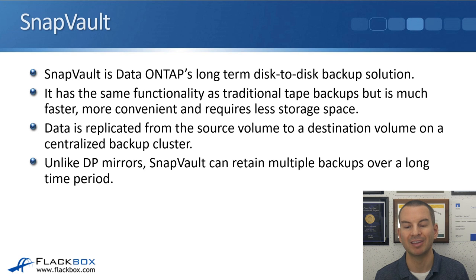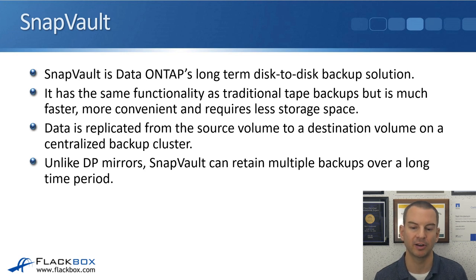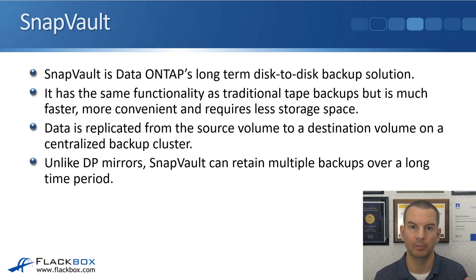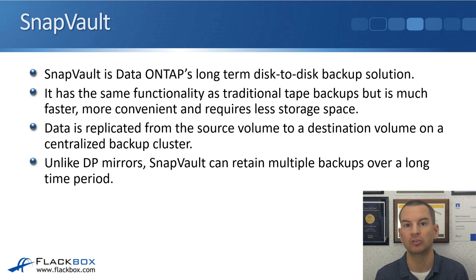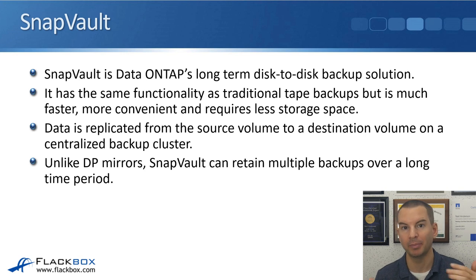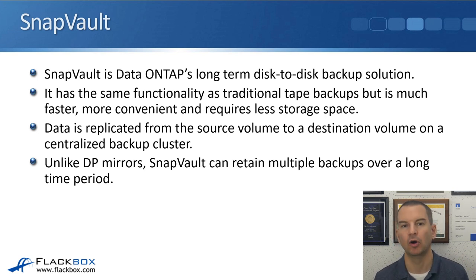That is where SnapVault comes in. SnapVault is Data ONTAP's long-term disk-to-disk backup solution. It has the same functionality as traditional tape backups, but it's much faster, more convenient, and requires less storage space. Data is replicated from source volume to a destination volume on a centralized backup cluster. Unlike DP mirrors, SnapVault can retain multiple backups over a long time period. With SnapMirror DP mirrors, it keeps a single copy in sync on both sides and the destination can become writable for failover, but it does not keep copies going back in time. With SnapVault, it keeps copies going back in time for backup but cannot be made into a writable copy. So SnapMirror is used for disaster recovery; SnapVault is used for backup.